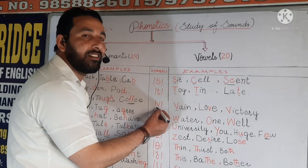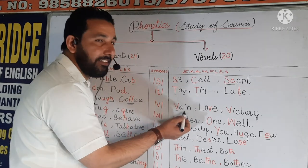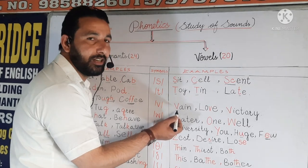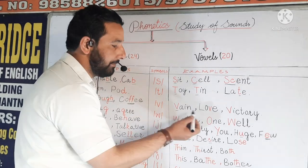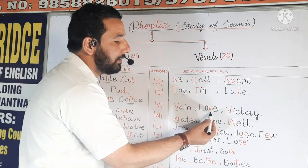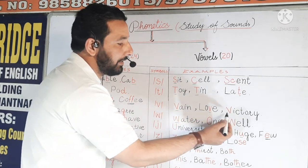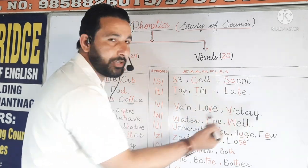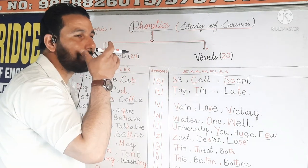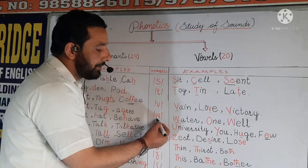Next example is V. In the example 'vain', we have to start with the sound V. Next example is 'love' — here we have the sound V. Next is 'victory' — you have to keep the mouth open when producing this sound V.